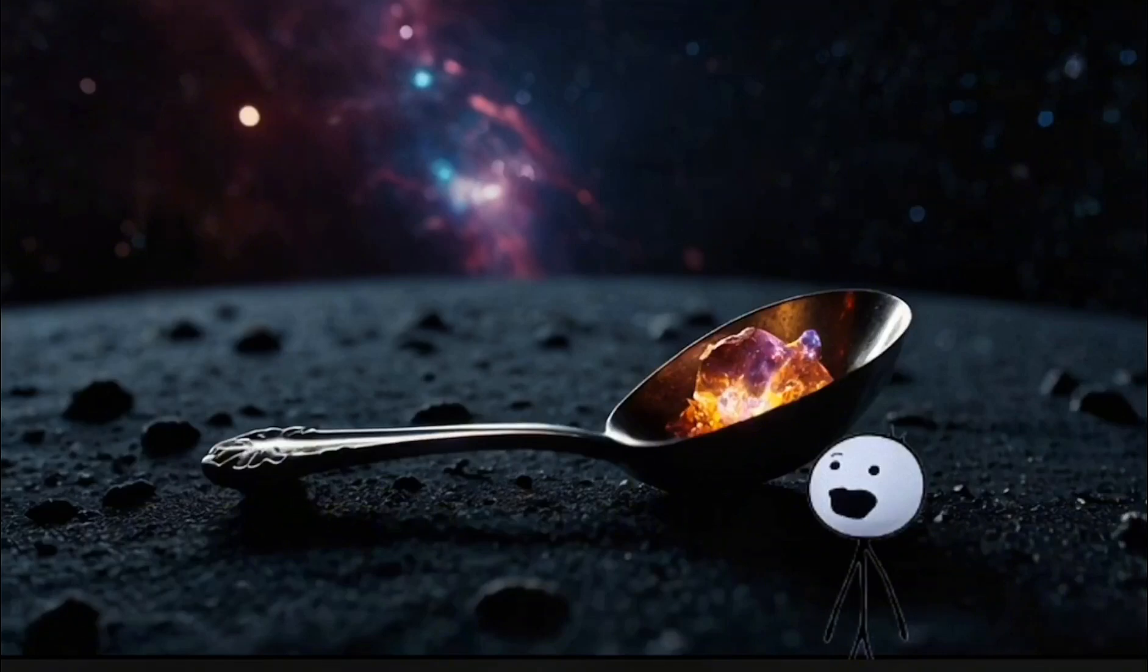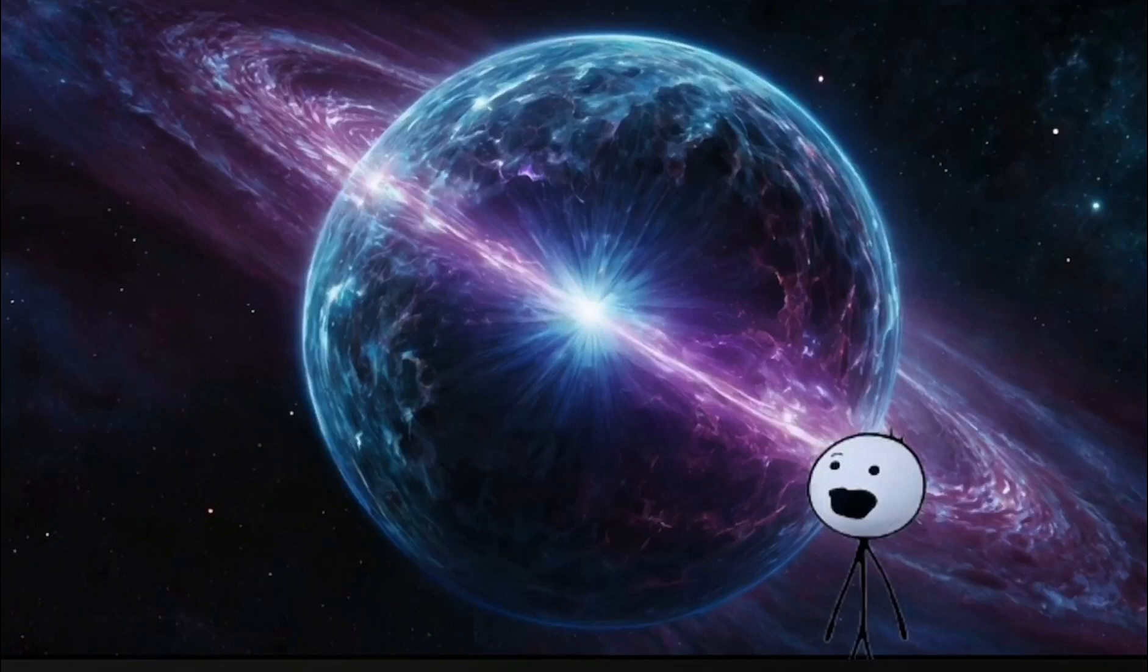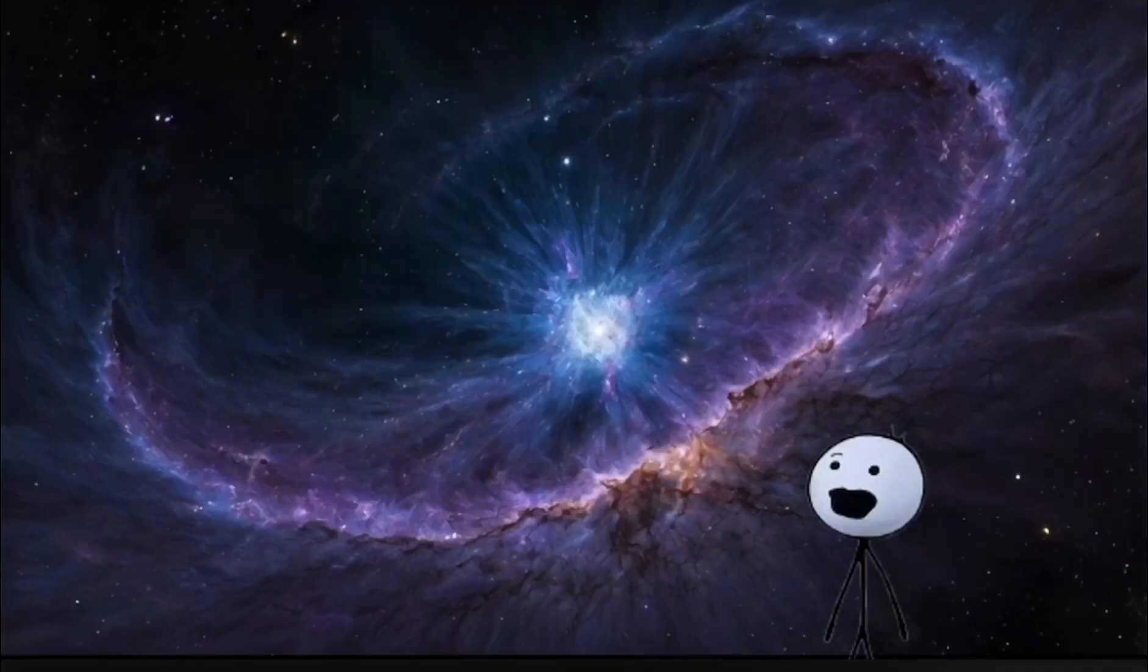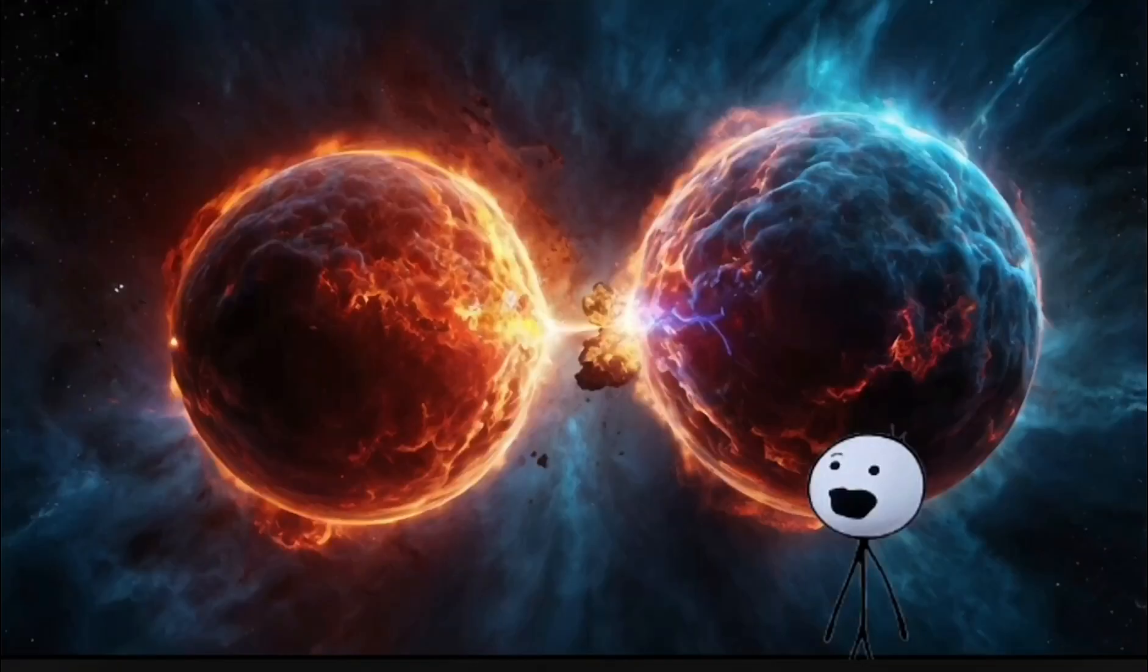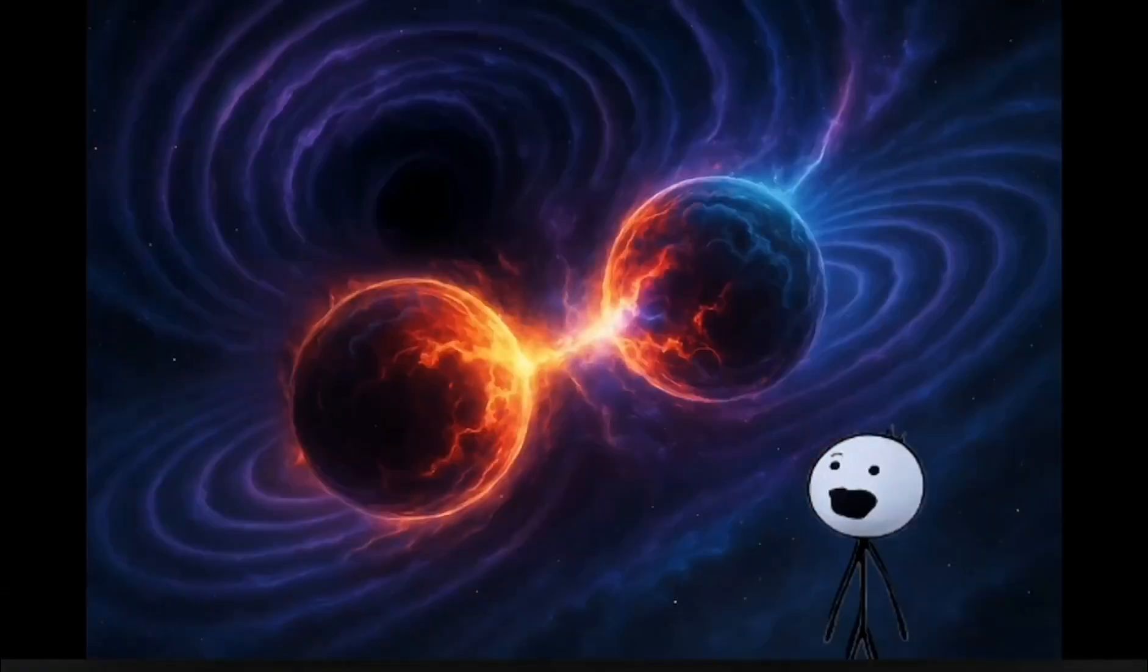Some neutron stars spin hundreds of times per second, firing beams of radiation into space. These are called pulsars, and they're basically space lighthouses, but ones that could cook you with x-rays. And just in case you needed more nightmare fuel, if two neutron stars collide, they create gravitational waves, and sometimes, a black hole.